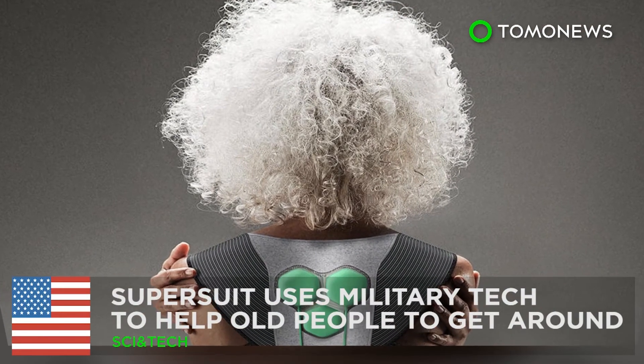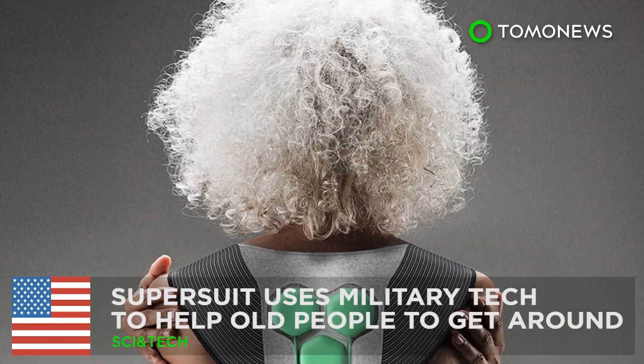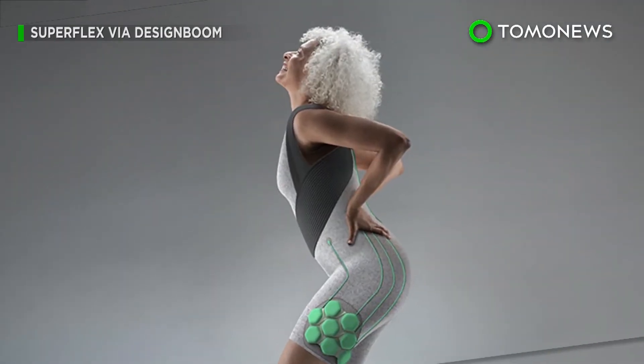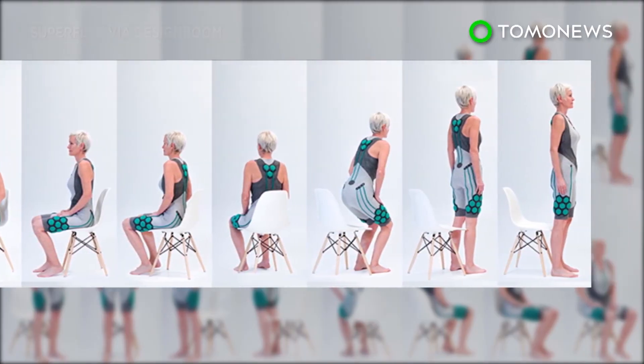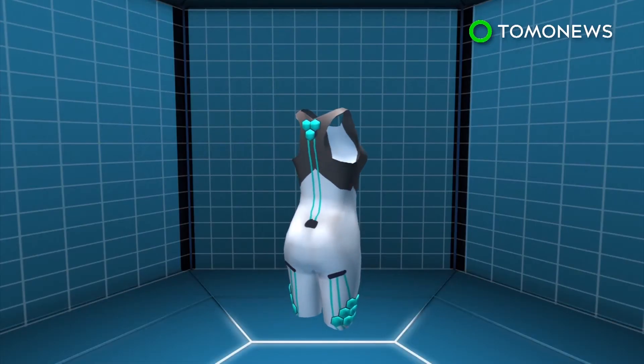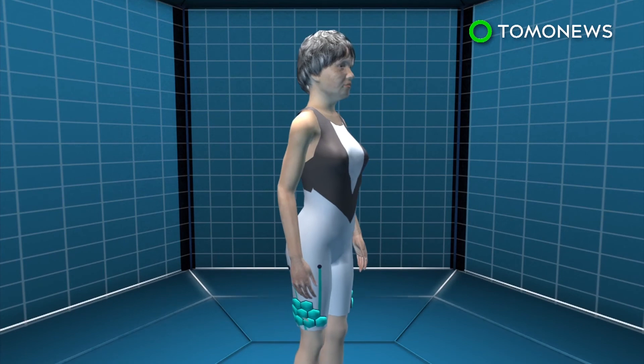This super-suit can help your grandmother get around more easily. A California-based startup has designed a powered suit that can provide extra muscle strength for elderly people and increase their mobility. The Aura-powered suit is a smart suit designed to be worn in direct contact with the body.